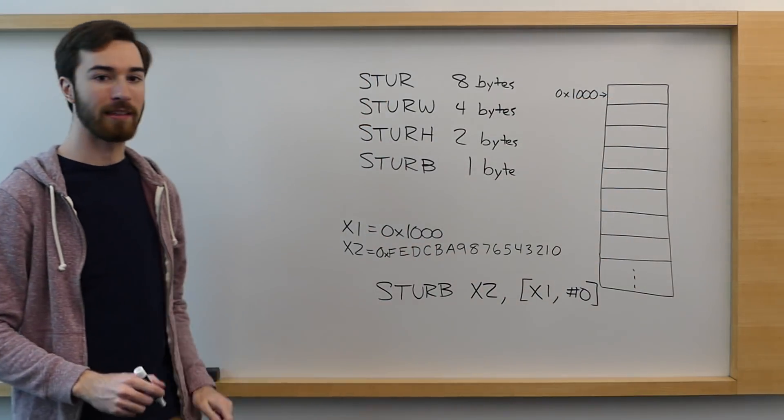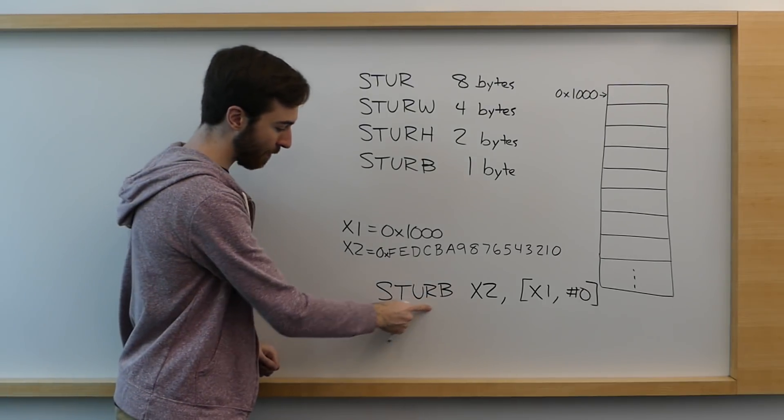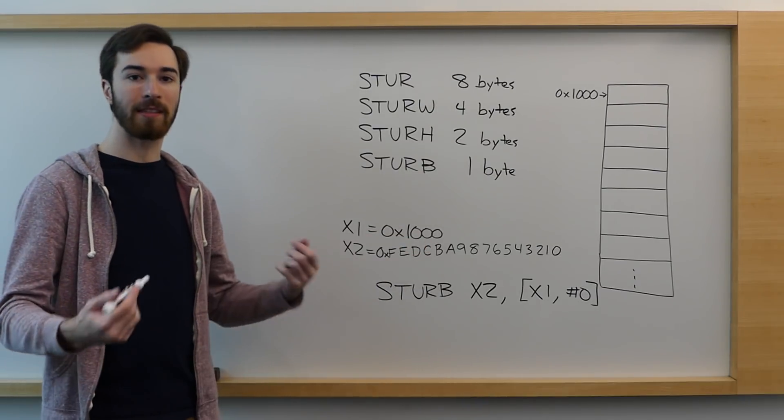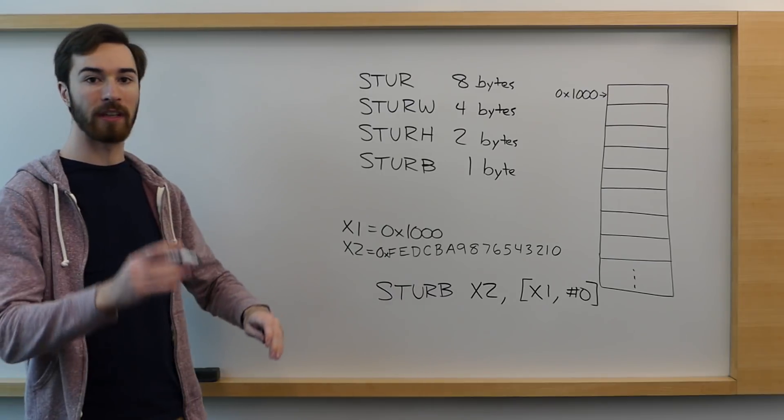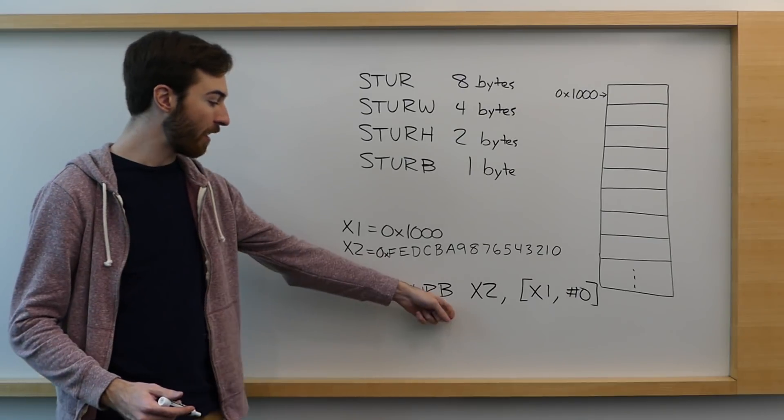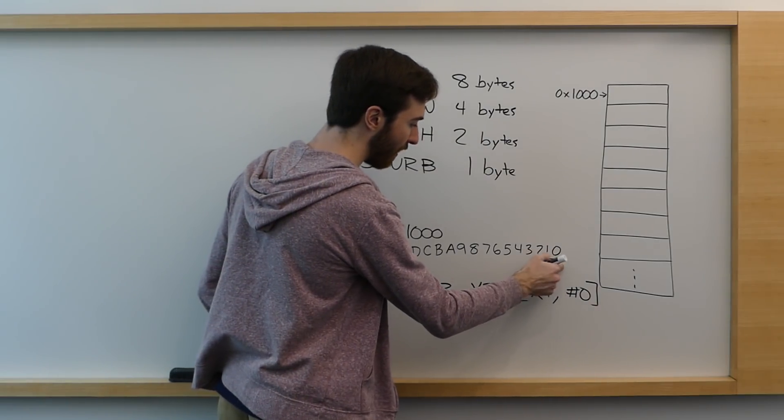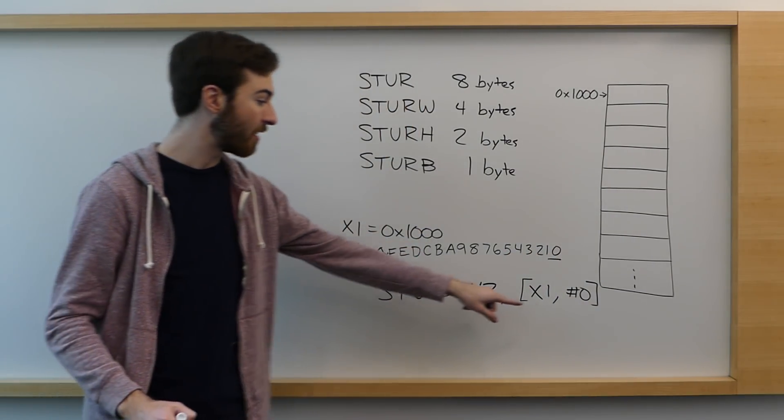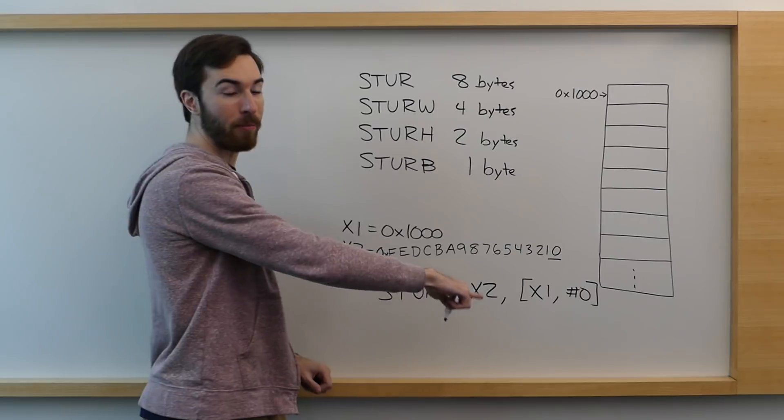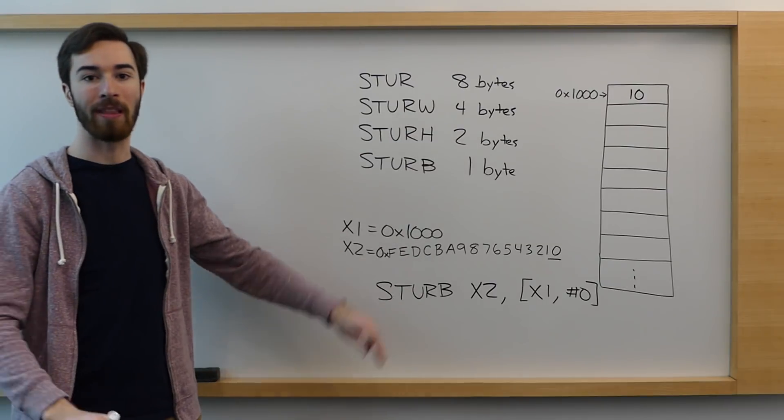So in this case X1 contains the hex 1000 and we have an offset zero. So it will start storing here and store it downward until it fills up as much as it needs. The amount that we store is dictated by what type of store command we use. Because registers are always 64 bits or eight bytes large, but we don't always want to store an entire eight bytes to memory every time.